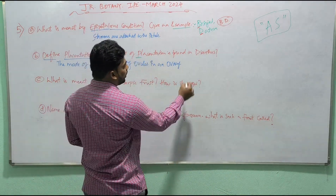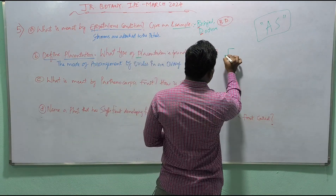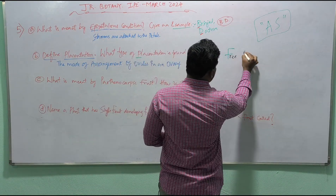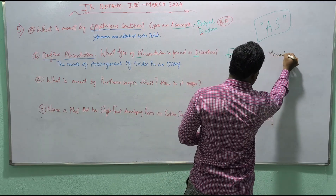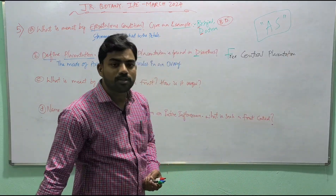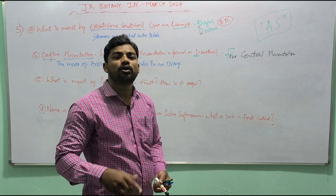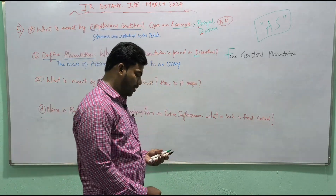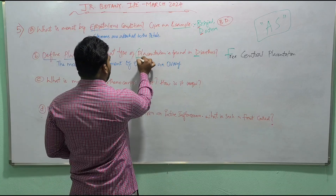Placentation in Dianthus is free central placentation. This means ovules are arranged on a central axis without any dividing septa. So your answer — remember the mnemonic: PDF.